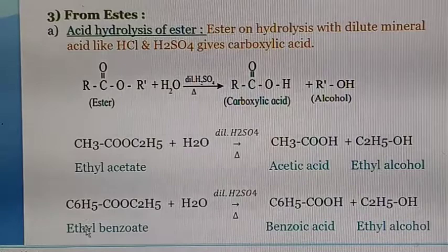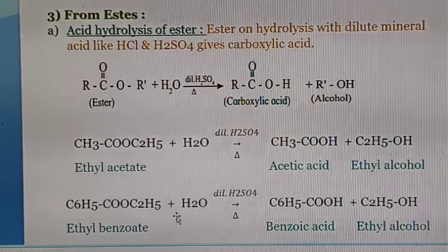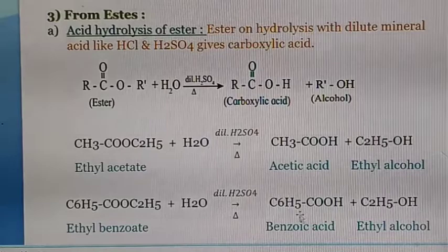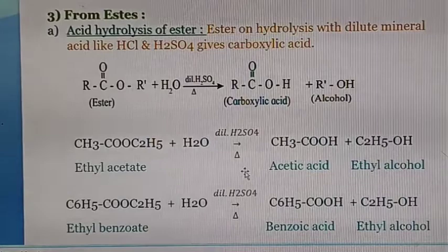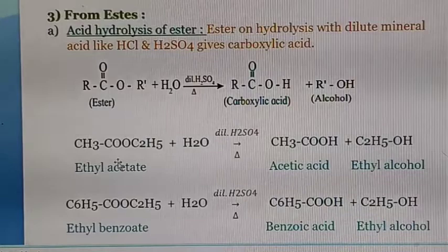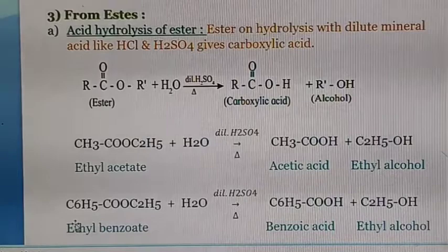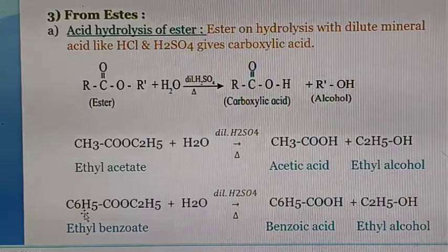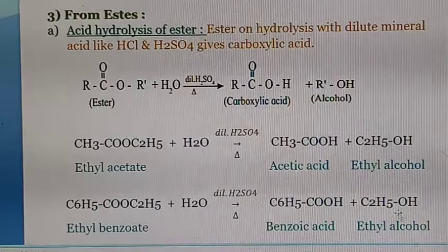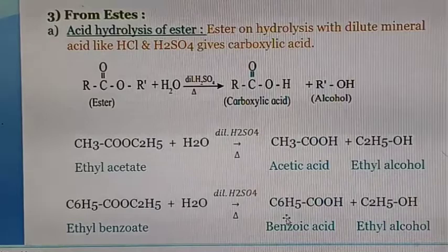If we take ethyl benzoate (C₆H₅COOC₂H₅) and hydrolyze it in presence of dilute H₂SO₄, it gives benzoic acid and ethyl alcohol. If a question asks how to prepare acetic acid from ethyl acetate, write this reaction. If asked how to prepare benzoic acid, take the corresponding ester. If the reactant name is given, write accordingly; otherwise, select the appropriate ester based on the desired product.